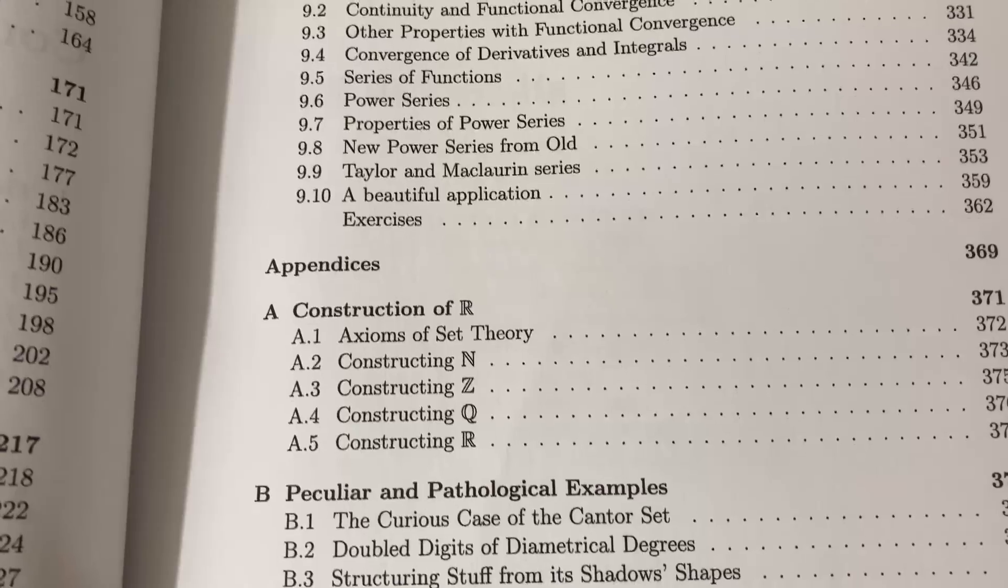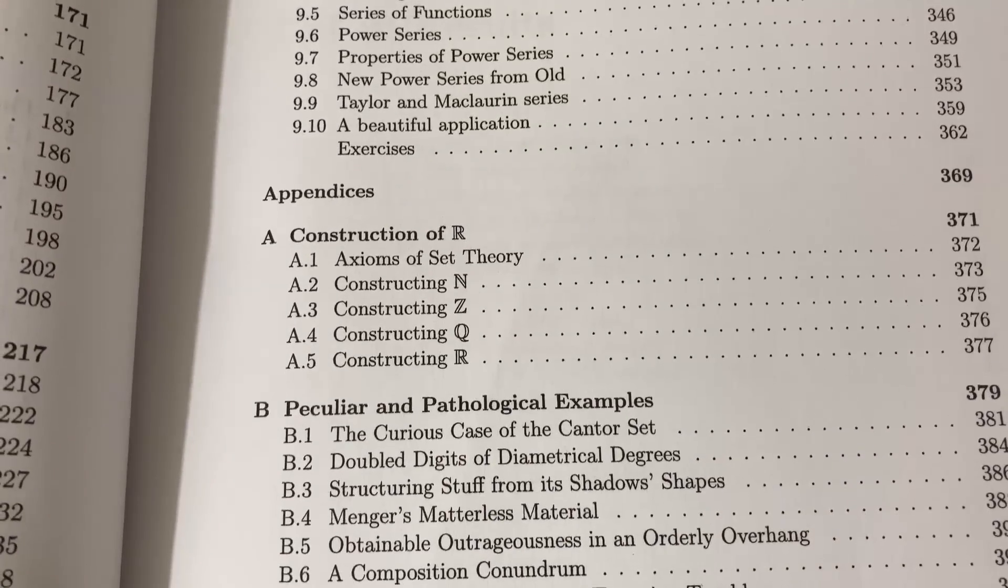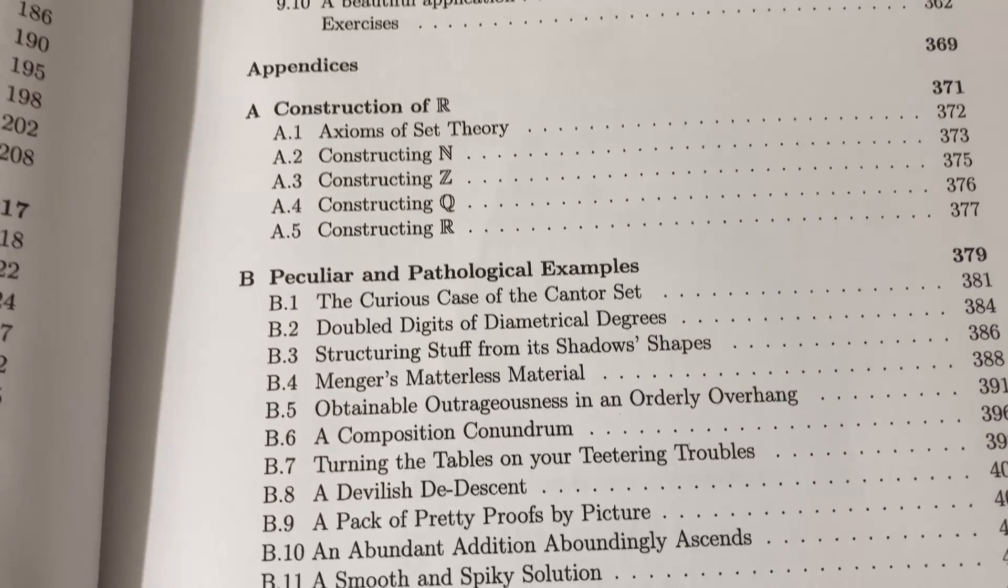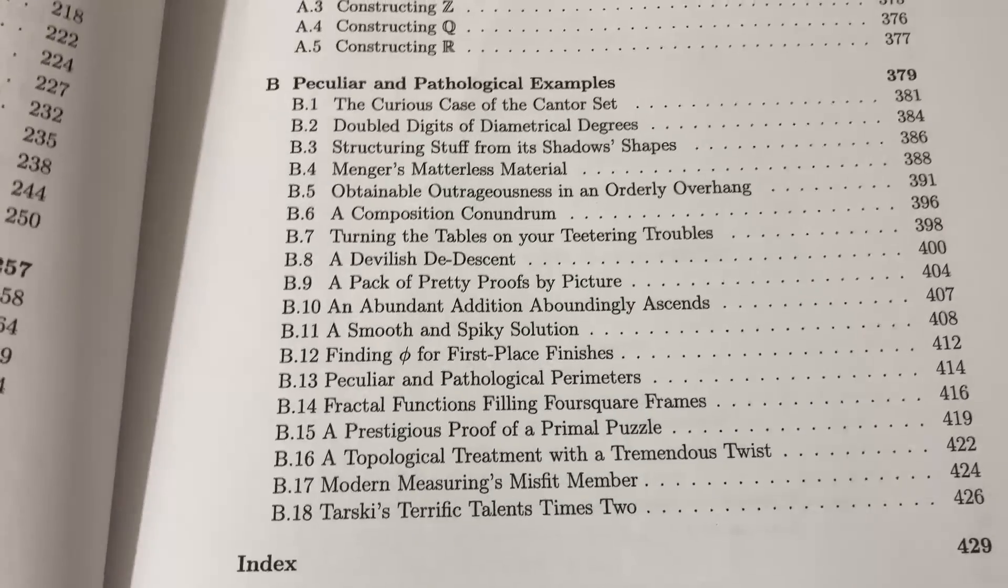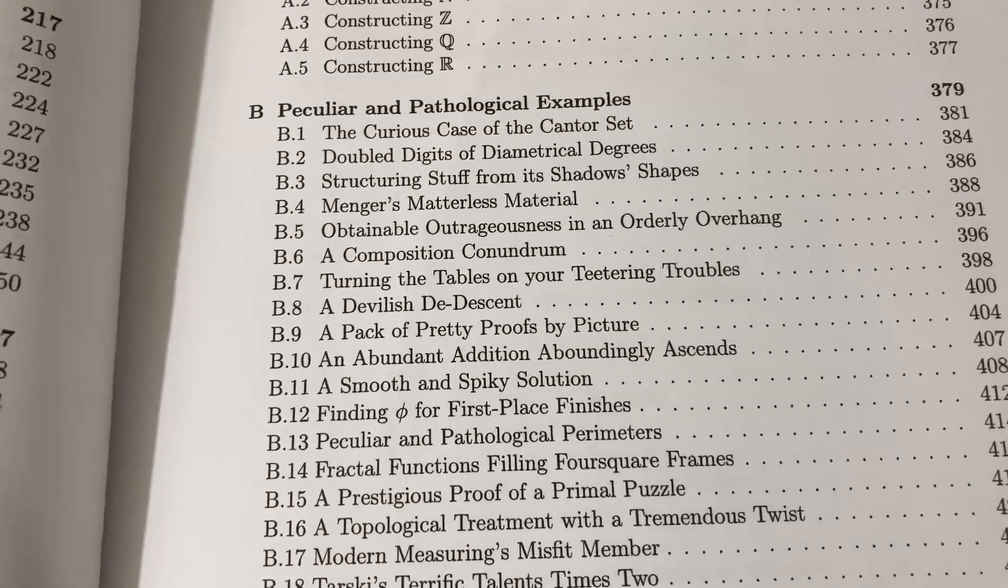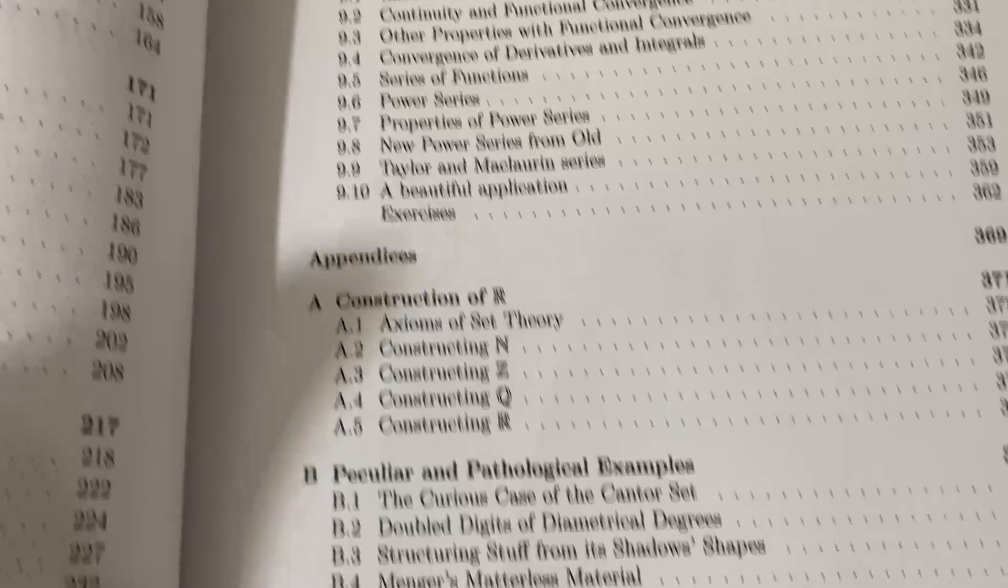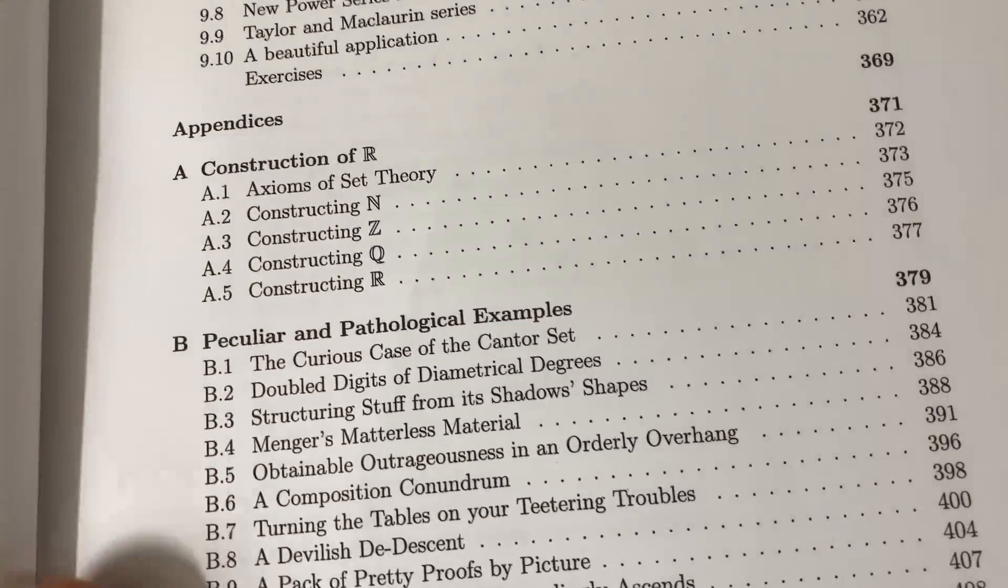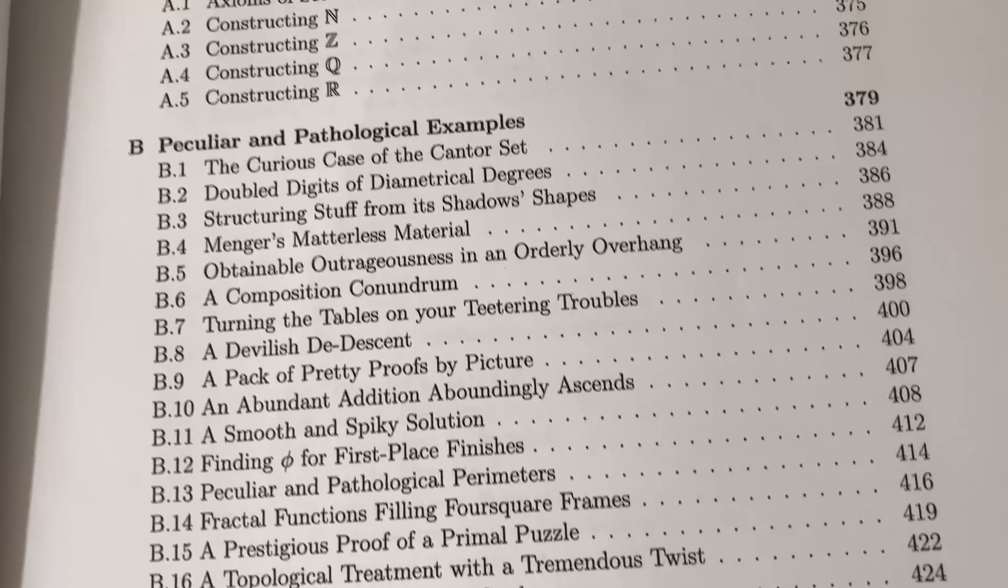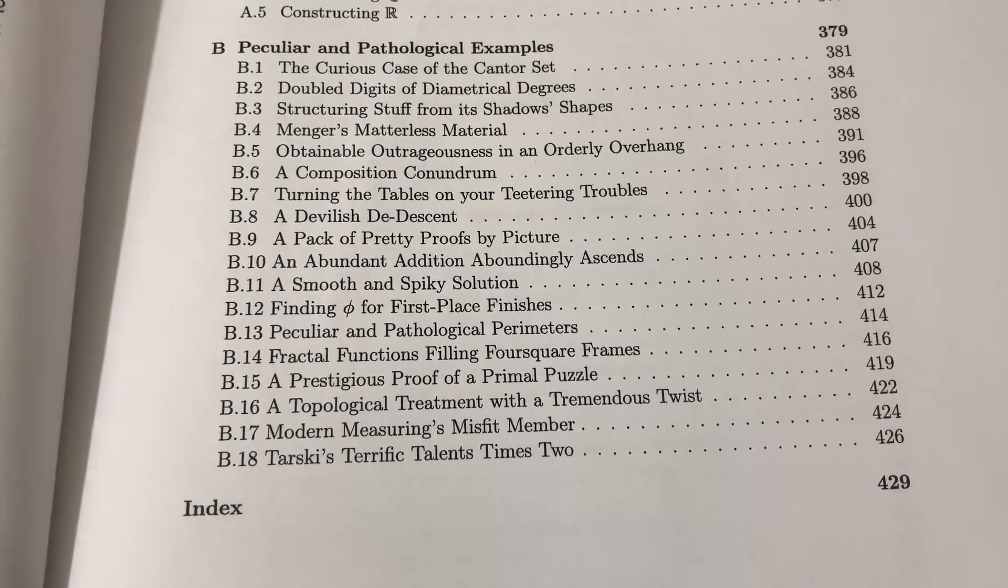Then there's some appendices. He talks about the construction of the real numbers. And I like this, peculiar and pathological examples. That's a really fun thing that he put in the book that he really didn't need to. The book is done. But no, Jay decides to add extra content that is extraordinarily interesting. I think that's awesome.